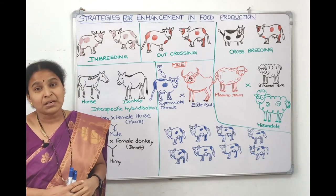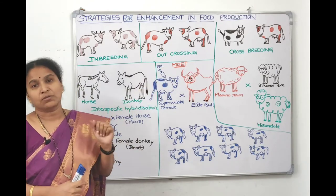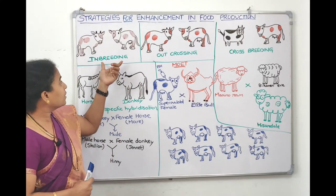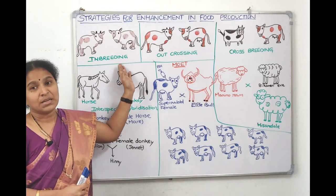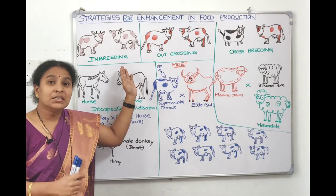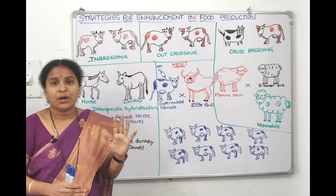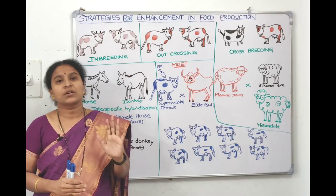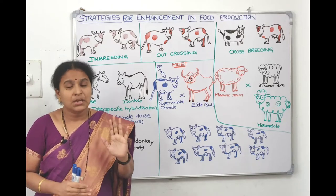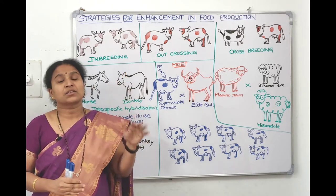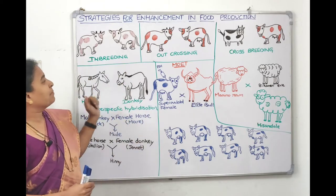To overcome inbreeding depression we need to go for outcrossing. Inbreeding is breeding between the same breed for four to six generations to ensure pure line, ensure homozygosity, increase superior characters, and eliminate recessive characters.